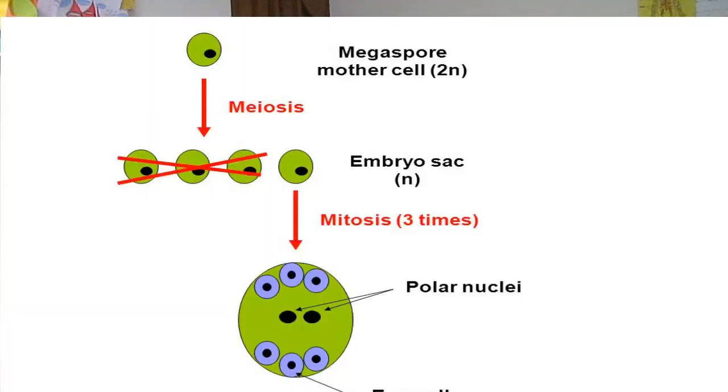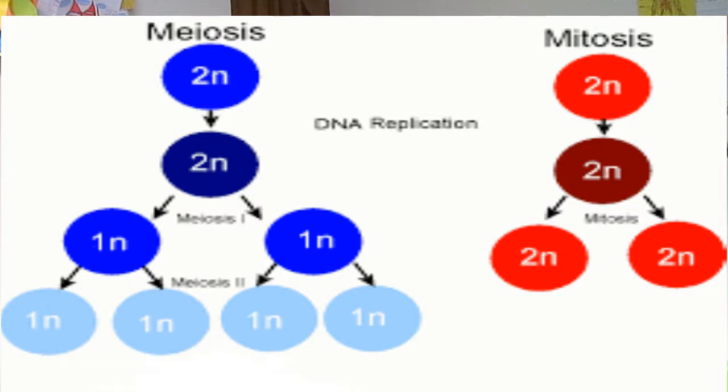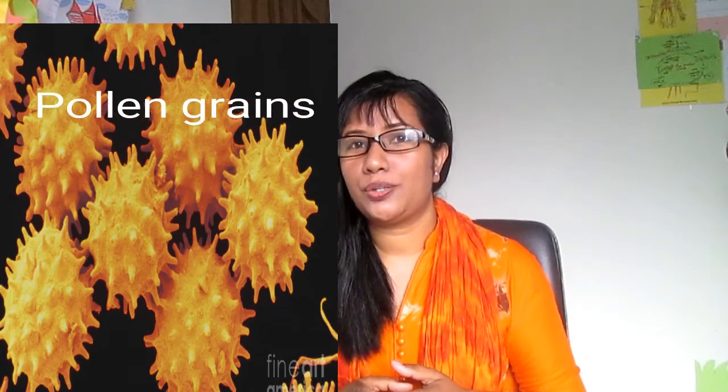Inside the anthers, diploid pollen mother cells divide by meiosis to form four haploid cells. The nuclei of each of these haploid cells then divide by mitosis, but the cell itself does not divide — cytokinesis does not take place — resulting in cells that each contain two haploid nuclei.